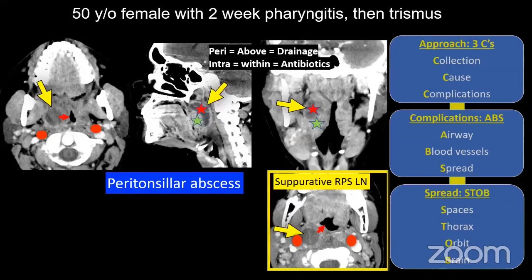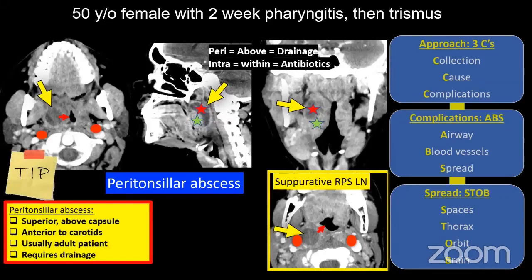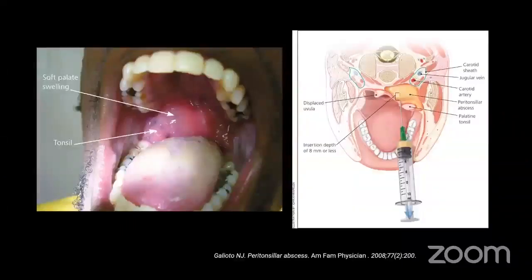Peritonsillar abscess is critically important to identify because the collection is outside the tonsil capsule — between the tonsil and the constrictor muscle — making it very easy for infection to spread to nearby spaces. In contrast, intratonsillar abscess is confined within the capsule and has very low spread potential. Peritonsillar abscess: collection is superior and anterior to the carotid, can push the carotid posteriorly — comment on that — and usually requires drainage. It is more commonly seen in adults, unlike tonsillitis which is more common in children.